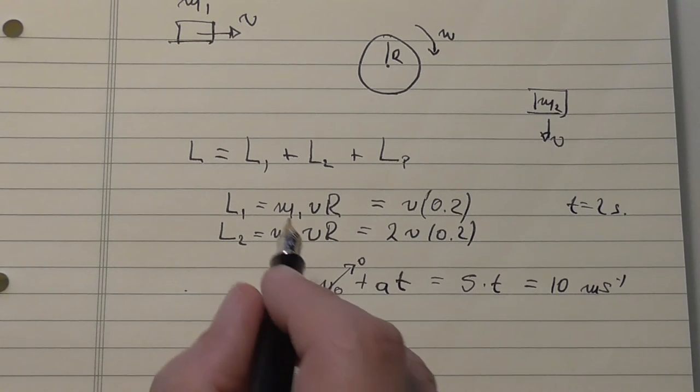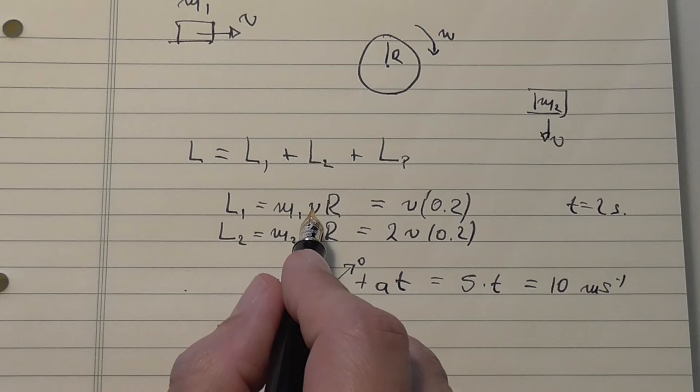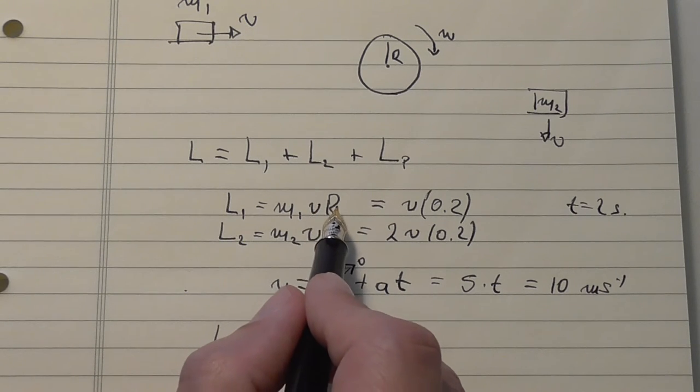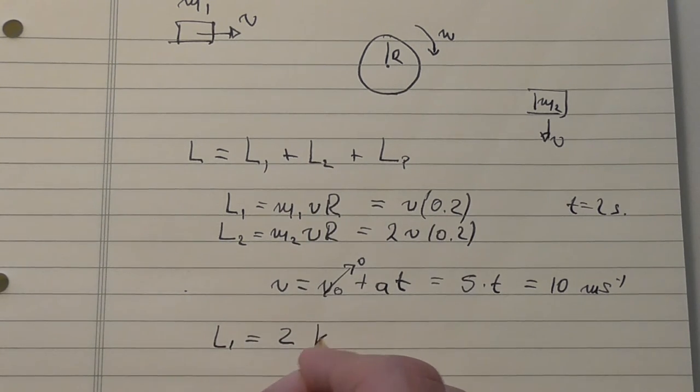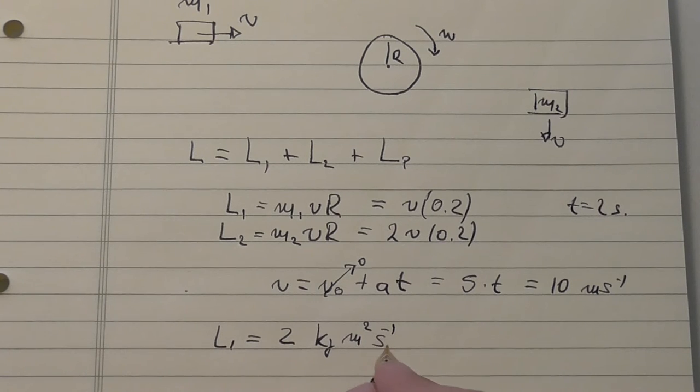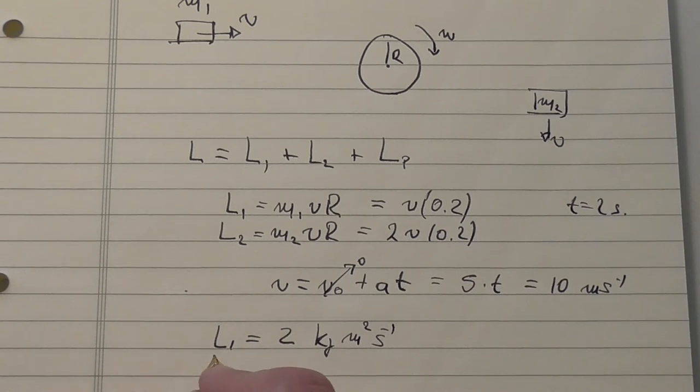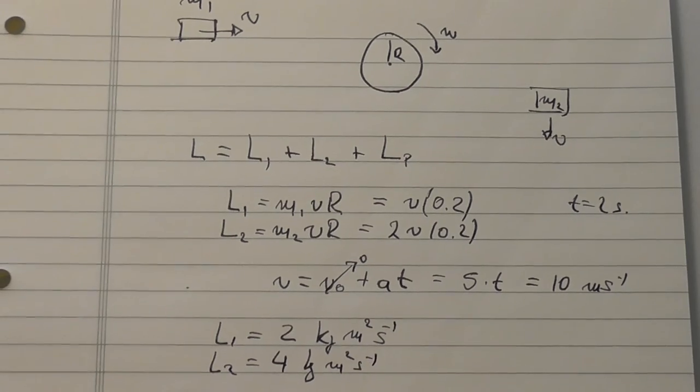So now L1 is equal to 10 times 0.2 is 2. What are the units? The units are kilograms, speed has meters per second, this is meters, so this is kilograms meters squared per second. And L2 will be 4, because it's 2 times that.